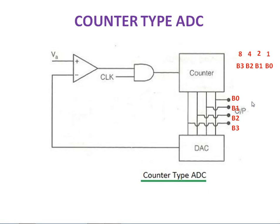Let us see the operation of counter type ADC. Here VA represents the analog input signal. The 4 volt is the analog input signal. Practically speaking, if the boiler temperature is 40 degrees Celsius, then your RTD will generate 4 volt. That 4 volt is given to this comparator.